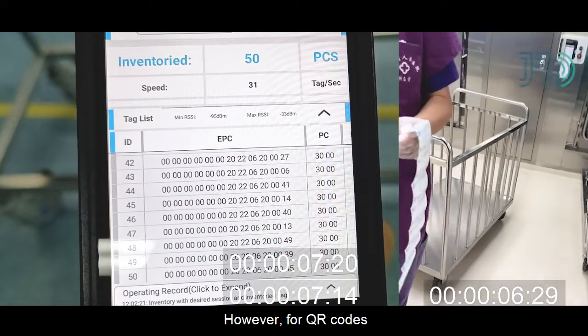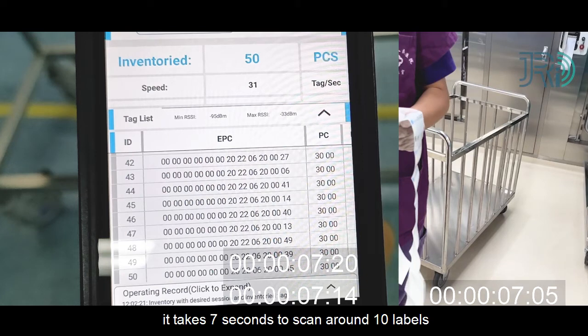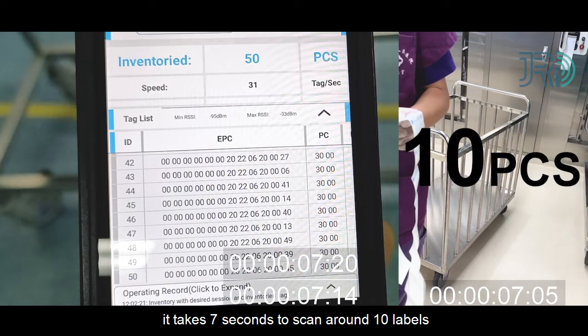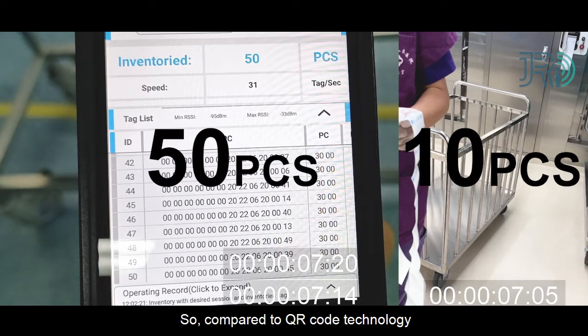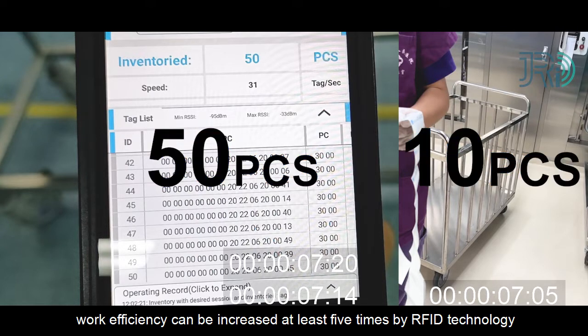However, for QR codes, it takes 7 seconds to scan around 10 labels. So, compared to QR code technology, work efficiency can be increased at least 5 times by RFID technology.